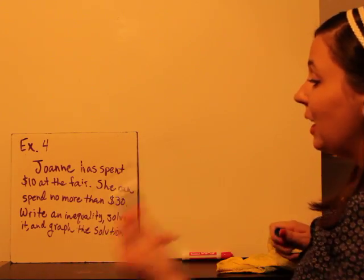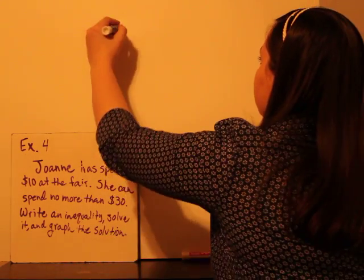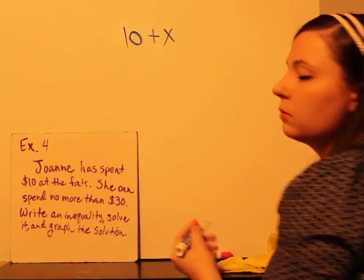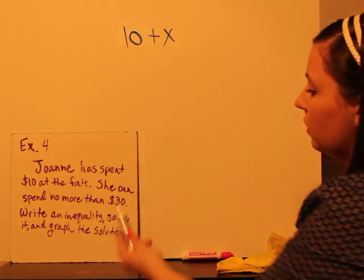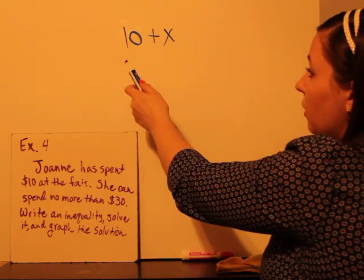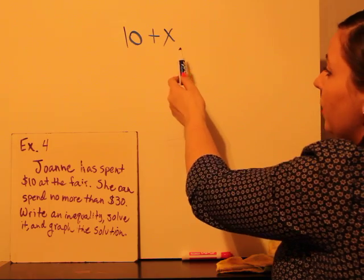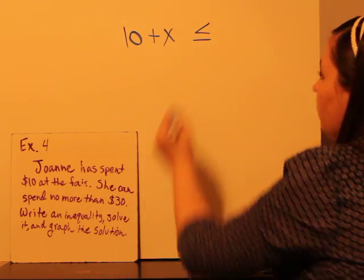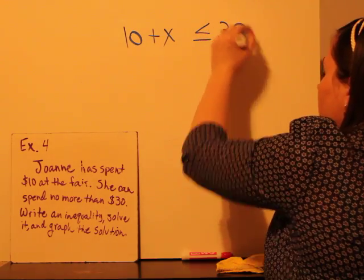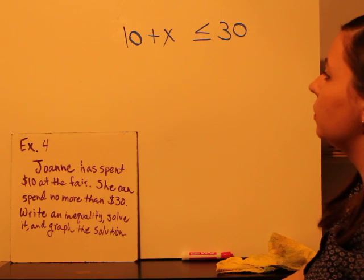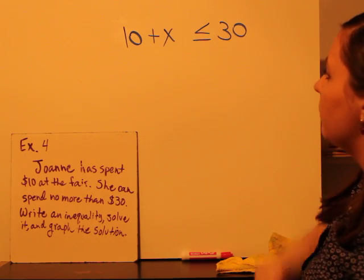So she spent $10 at the fair. And she can spend some other amount of money, so we're adding on, but she can't spend any more than $30. So $10 plus some other amount of dollars has to be less than or equal to 30 because it's no more than that. She could still spend $30. That's why we have that or equal to. So now we've got to solve this.